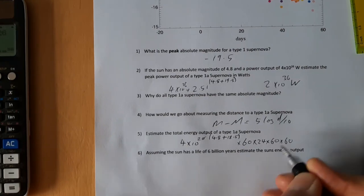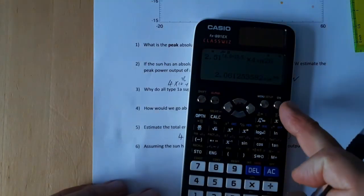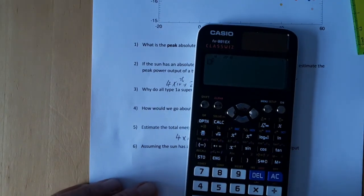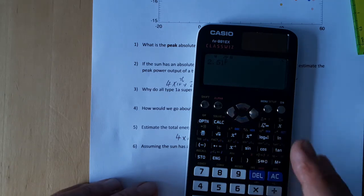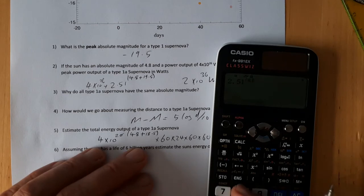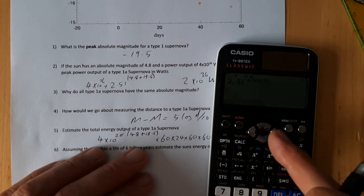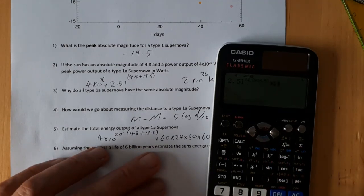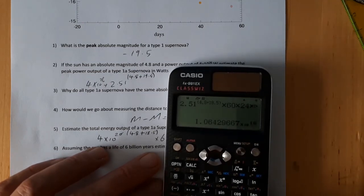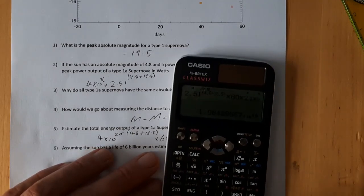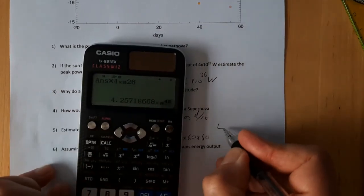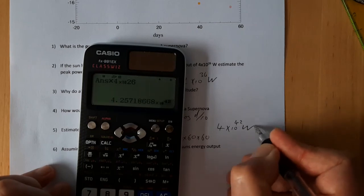Let's see if I can not mess up this time. 2.51 to the power 4.8 plus 18.5, close bracket, multiplied by 60 times 24 times 60 times 60, gives us... oh I didn't multiply by the 4 times 10 to the 26. Giving us about 4 times 10 to the 42 watts. Now as I understand it that's a bit lower than it should be and you'll see why in a moment.